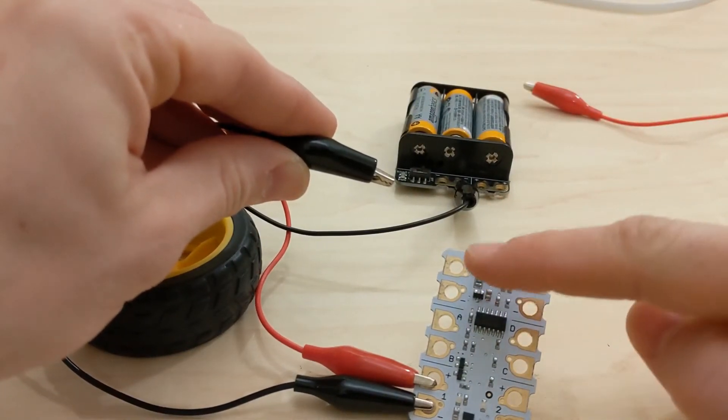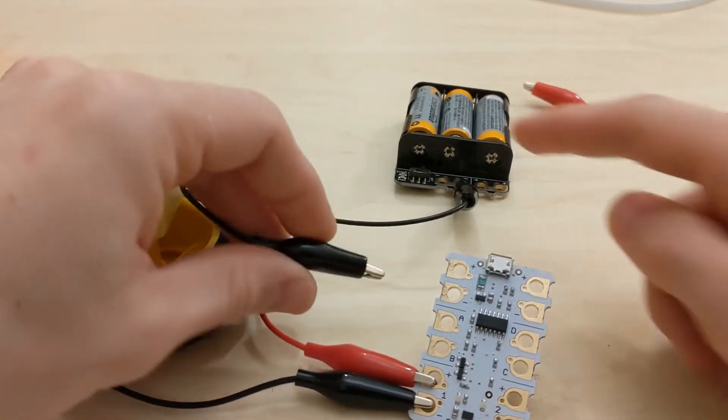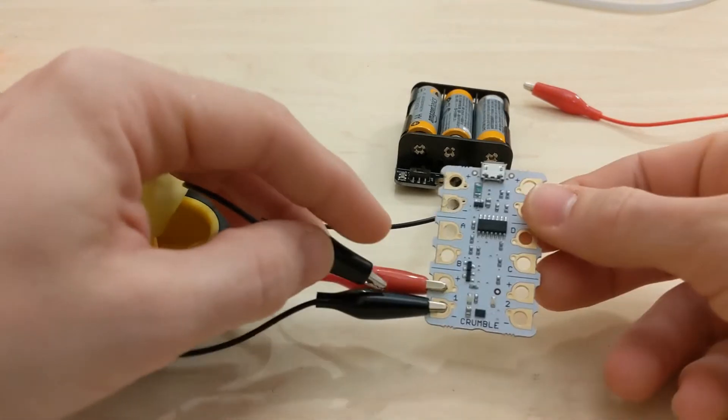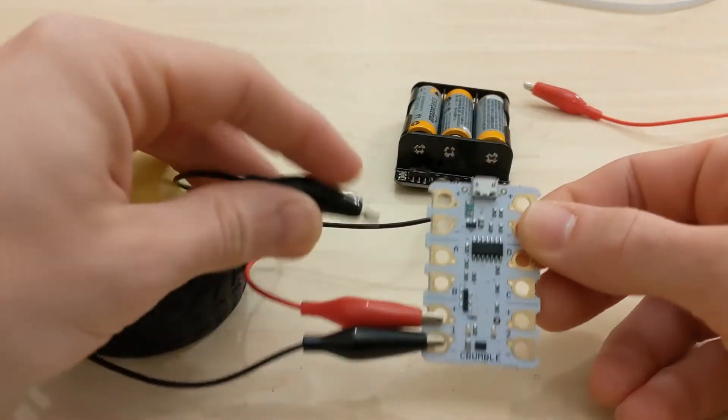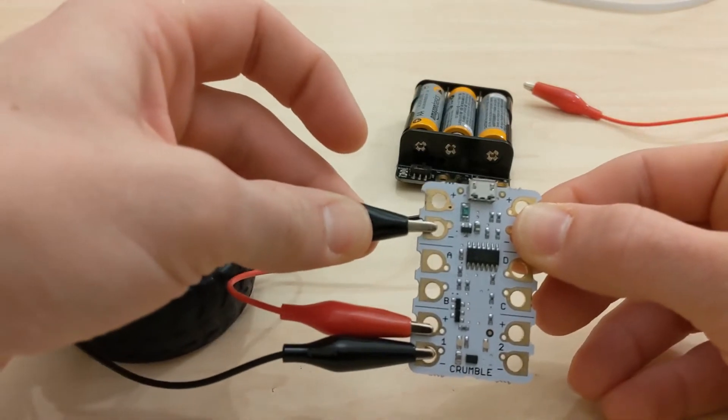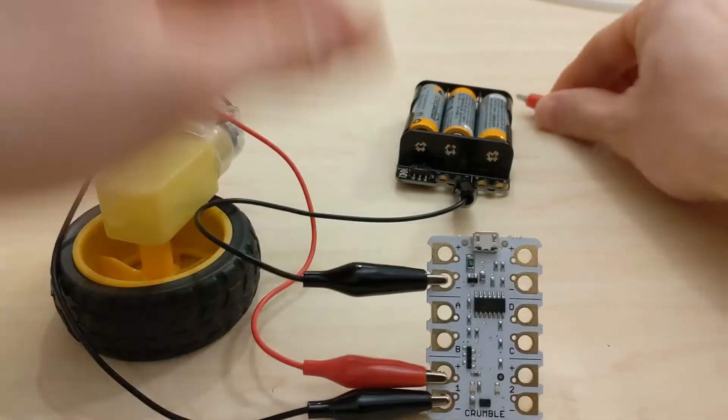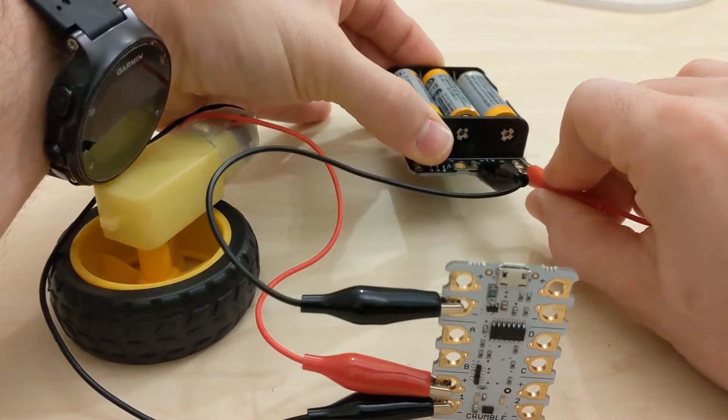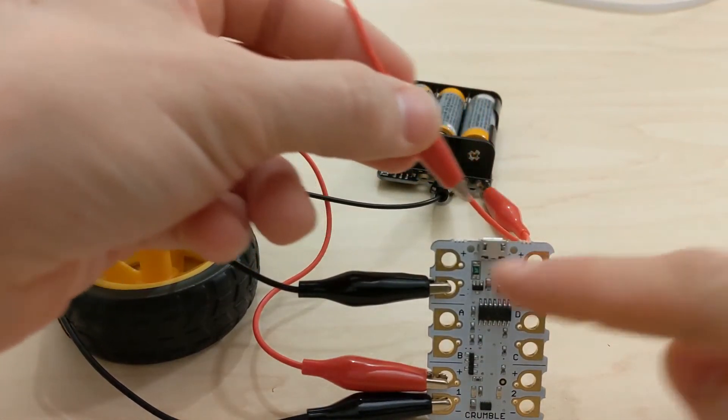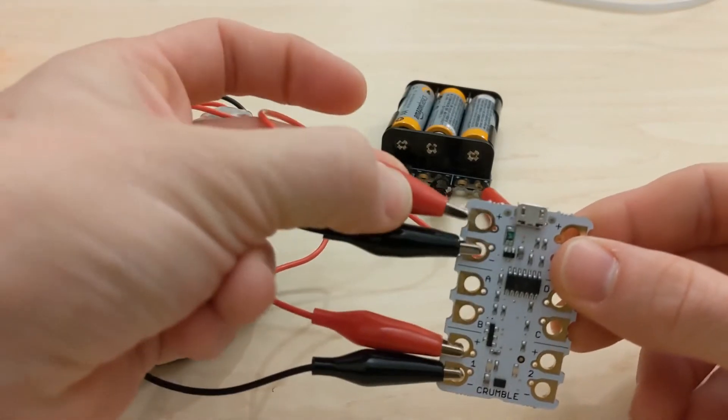You've got one on this side and one on that side, and these can either be for power coming in or powering something else. In this case the motors draw their power straight from the board, so we just need to connect the battery pack to the crumble board. Negative to negative and positive to positive—it doesn't matter, you could put the positive on this side. For neatness I always like to pair them up like that.